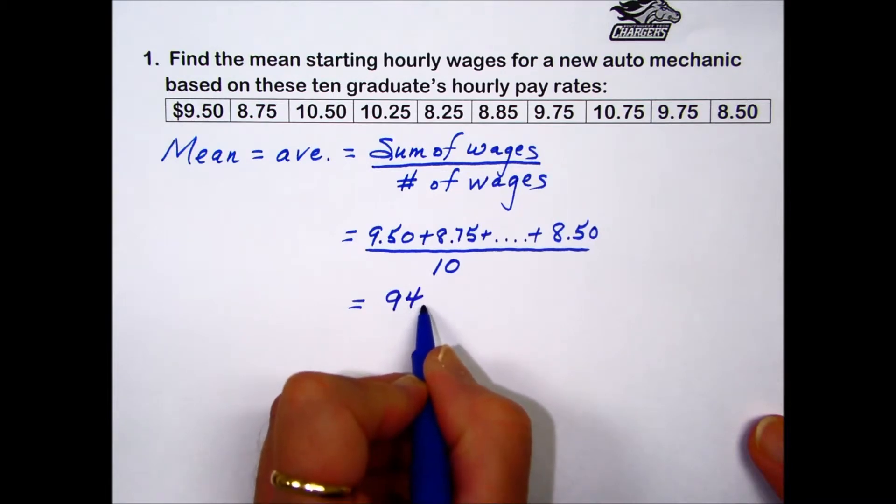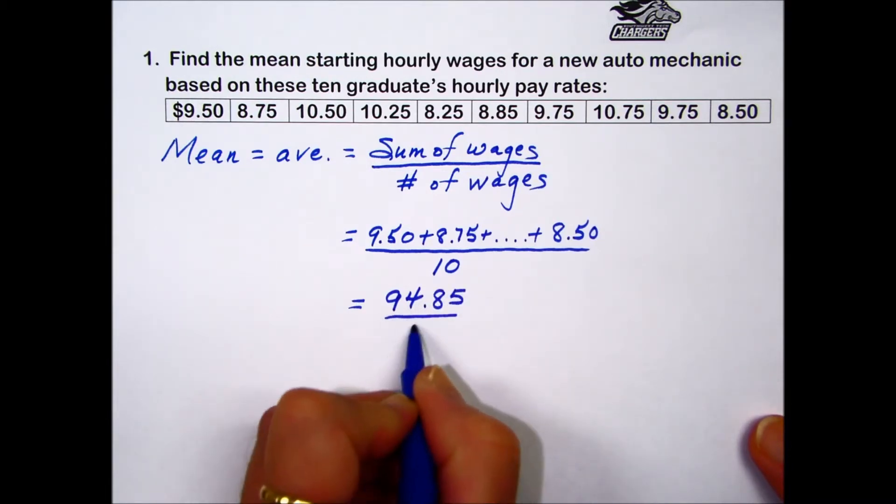When we add those 10 numbers up, we end up with a sum of $94.85 over 10.